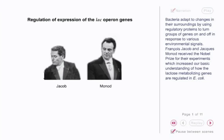Bacteria adapt to changes in their surroundings by using regulatory proteins to turn groups of genes on and off in response to various environmental signals. Francois Jacob and Jacques Monod received the Nobel Prize for their experiments which increased our basic understanding of how the lactose metabolizing genes are regulated in E. coli.